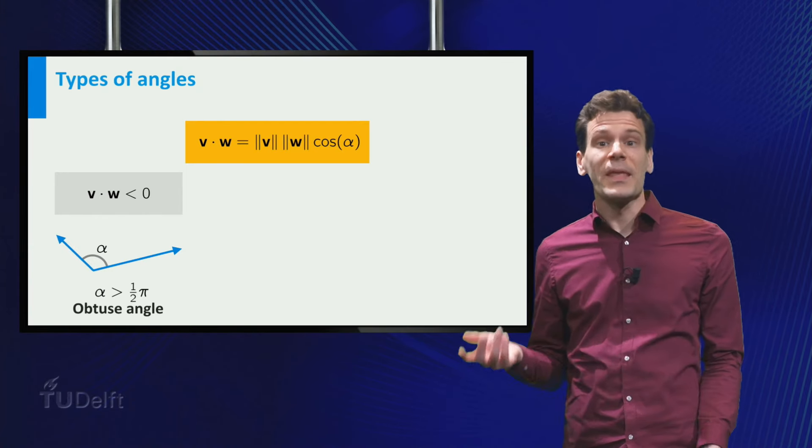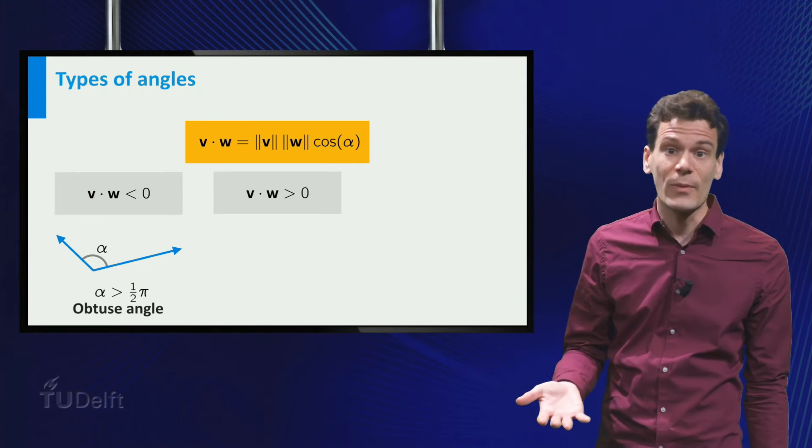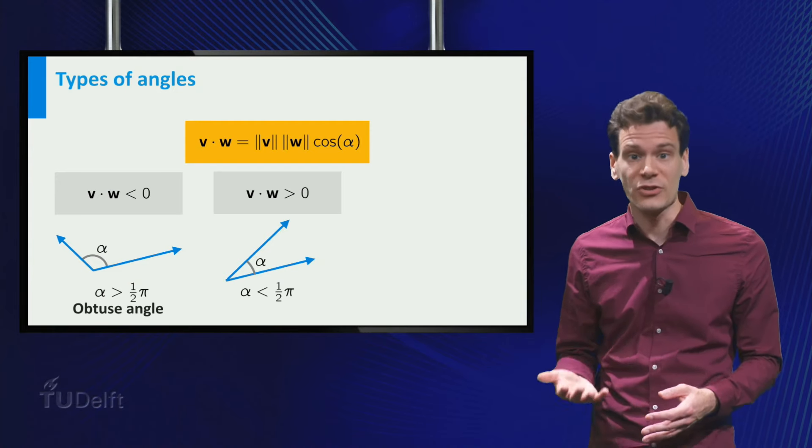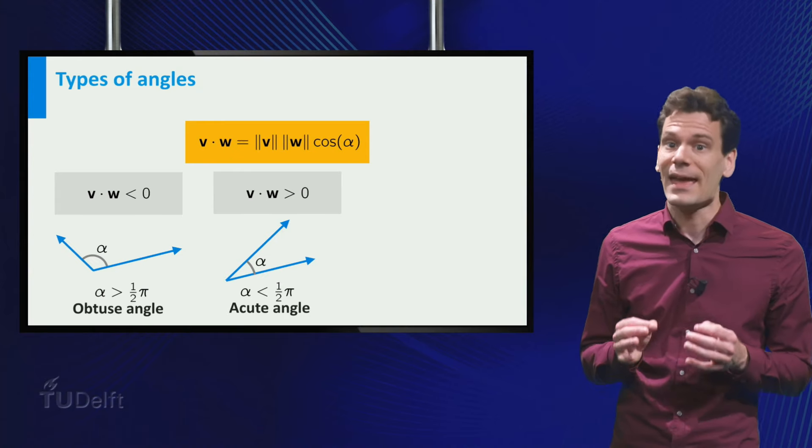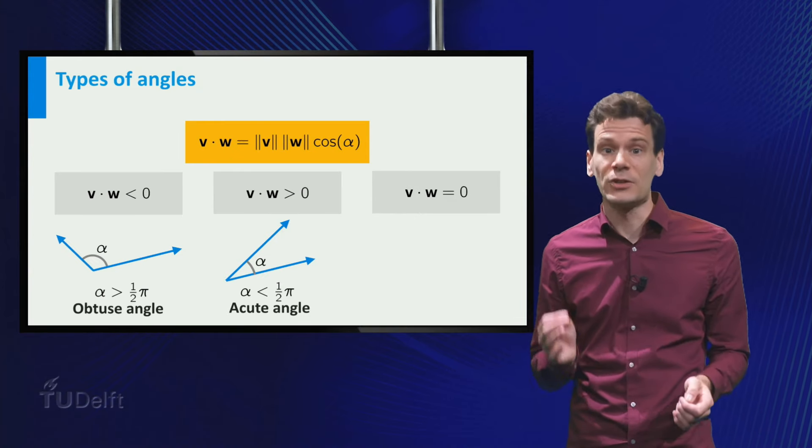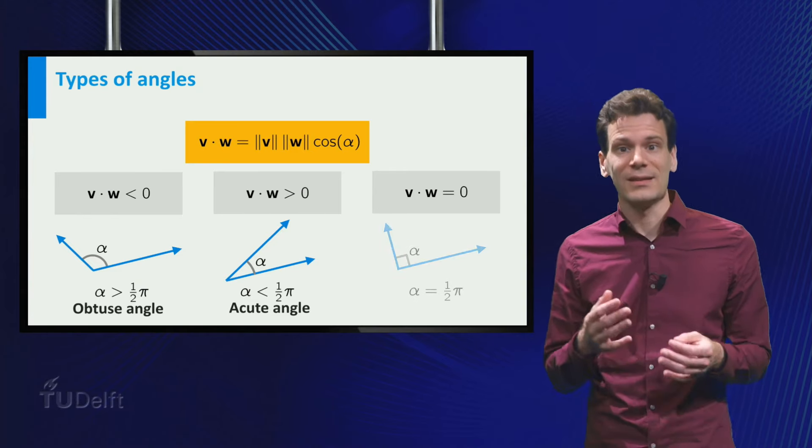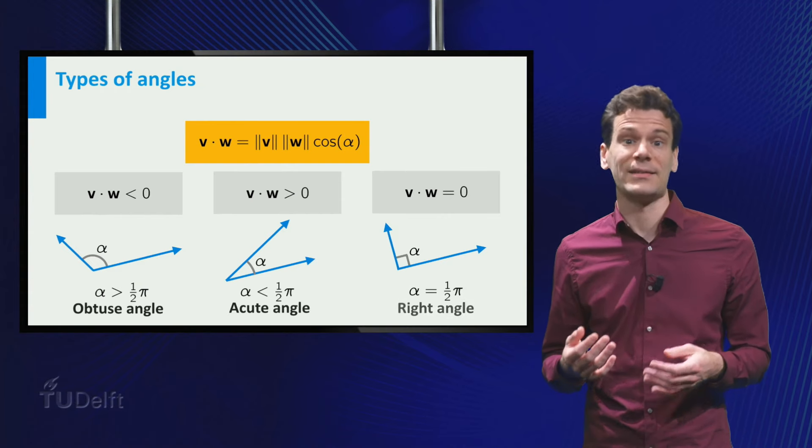On the other hand, if the dot product is positive, the cosine of the angle is positive as well. Then the angle is less than pi over 2, and such an angle is called acute. And finally, if the dot product is zero and the norms are non-zero, then the cosine of the angle is zero as well. This means that the angle is precisely pi over 2. That is, alpha is a right angle.